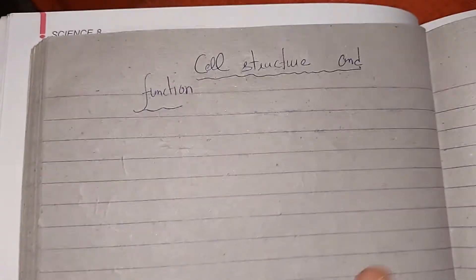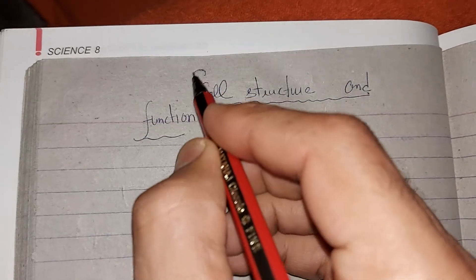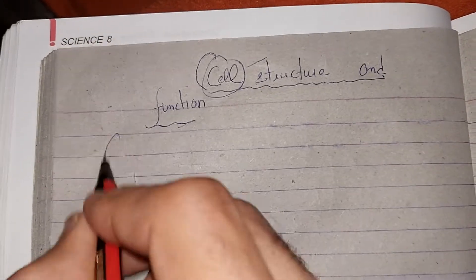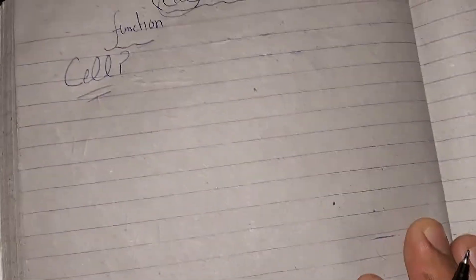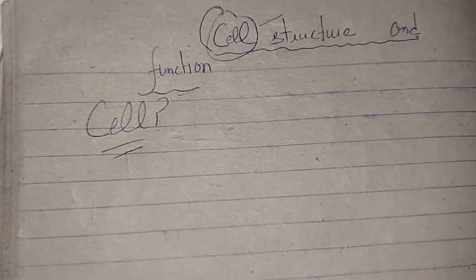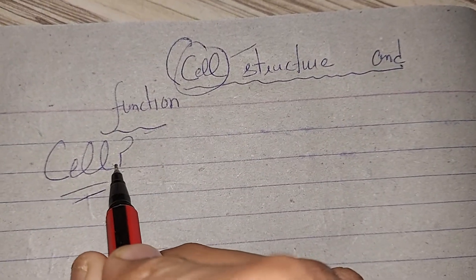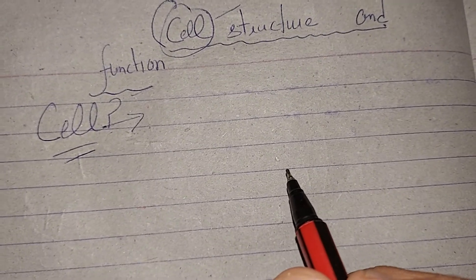What does this concept mean? It's Cell Structure and Functions. What is this concept? What is this cell? The first term is: what is cell? First of all, the topic is what is cell? We must know what is cell.